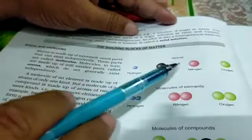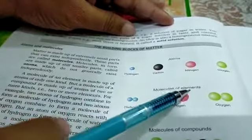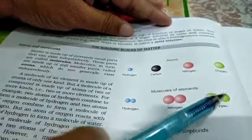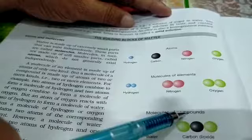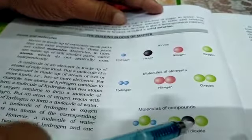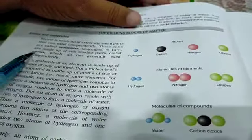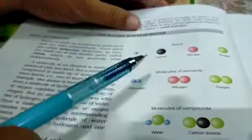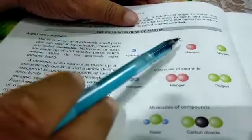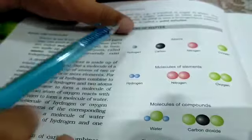यहां पर देखें atoms: hydrogen, carbon, nitrogen, oxygen। और यहां पर देखें molecules of element: hydrogen H2, nitrogen N2, oxygen O2। और यहां पर देखें molecules of compound जैसे कि water H2O, carbon dioxide CO2। यहां पर पहले से आपको दिखा दिया, इसी के बारे में हम आपसे explain करेंगे।